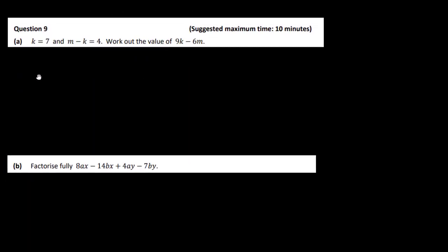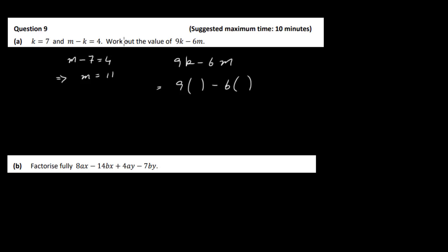For question 9 part A: k = 7 and m − k = 4, so m = 11. We need to find 9k − 6m. Substituting in: 9 × 7 = 63 and 6 × 11 = 66, so 63 − 66 = −3.